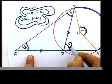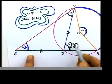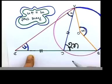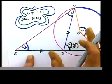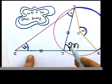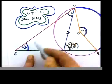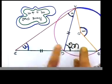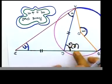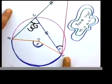n plus n which is 2n, so that should be 2n. The concept is very simple: exterior angle of a triangle is nothing but the sum of the interior opposite angles. So you add those two and you should get this angle — that's how we got 2n.